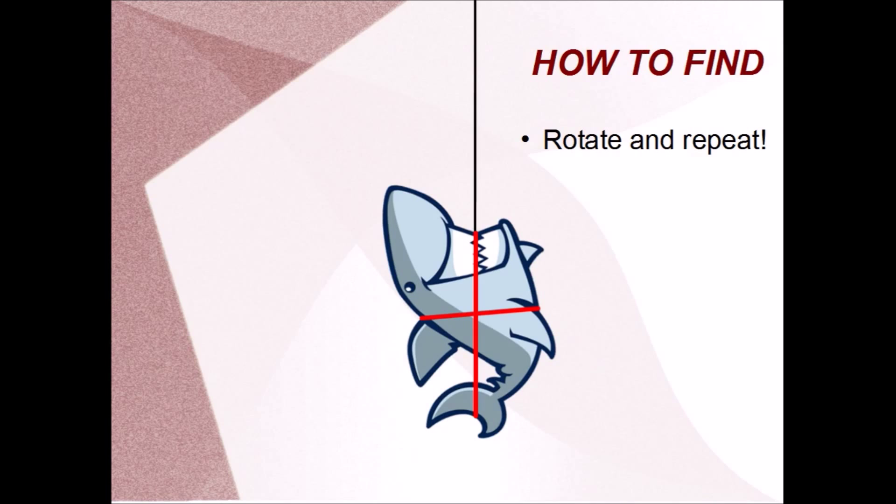From there, you rotate the object by hanging it at a different point. Draw another line down, then repeat as many times as you want. All your lines will cross at the location of the center of mass. For this shark, it's toward its big head.